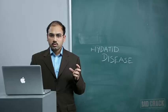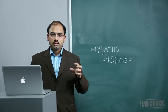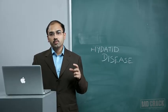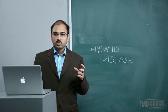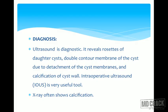Ultrasound is the primary diagnostic modality for echinococcosis. It reveals rosettes of daughter cysts, a double contour membrane of the cyst due to detachment of cyst membranes, and calcification of the cyst wall.